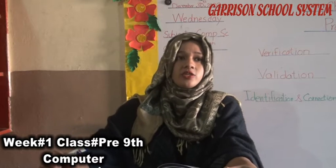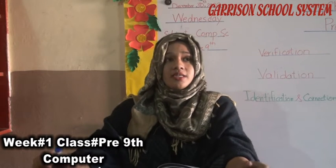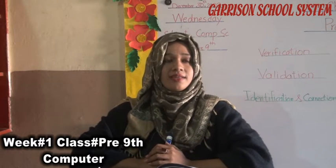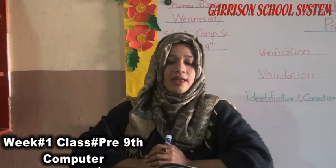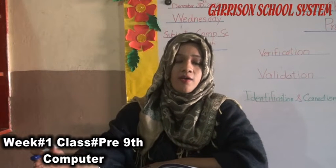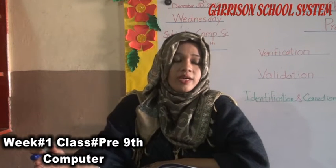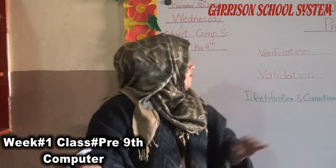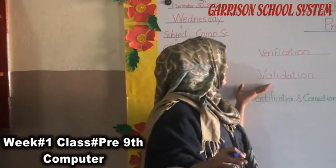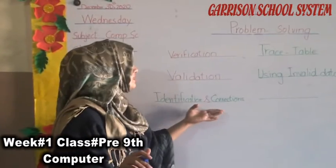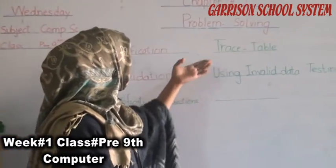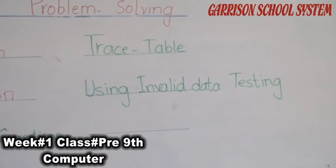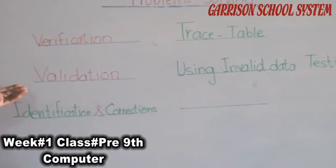Today's topic is verification and validation. When we divide our data into different steps, we can test and verify whether the data is valid or invalid, boundary test data, wrong data, or absent data. In this chapter, we will learn what is verification, what is validation, identifications and corrections in problem solving tests, and trace tables using data testing.